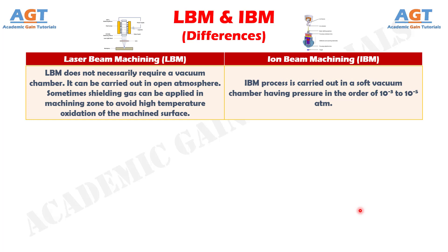Number 6. Laser beam machining does not necessarily require a vacuum chamber. It can be carried out in open atmosphere. Sometimes shielding gas can be applied in the machining zone to avoid high temperature oxidation of the machined surface, whereas ion beam machining process is carried out in a soft vacuum chamber having pressure in the order of 10⁻³ to 10⁻⁵ atmospheric pressure.